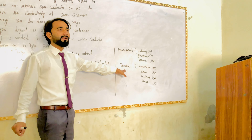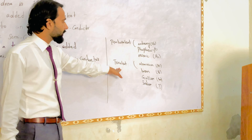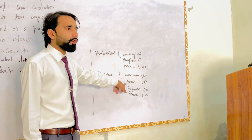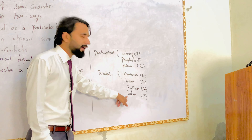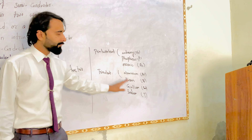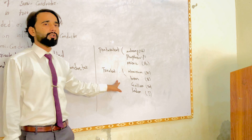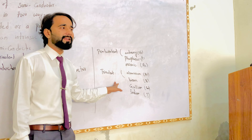The trivalent elements belong to the third group: aluminum, boron, gallium, and indium. In the outermost shell, there are 3 electrons.